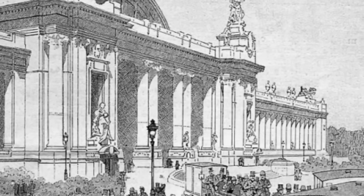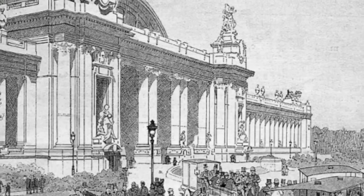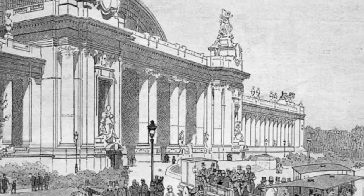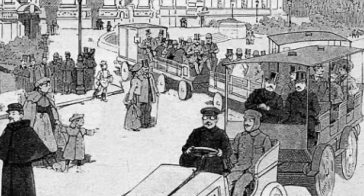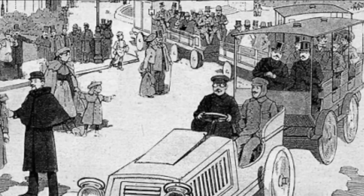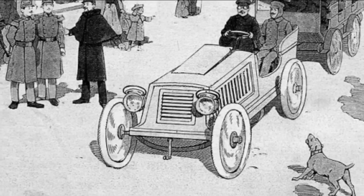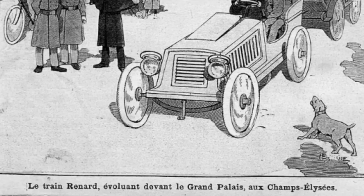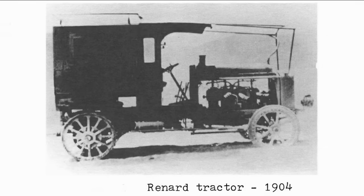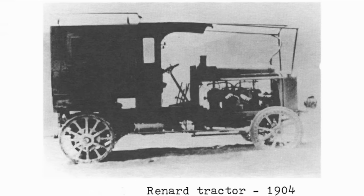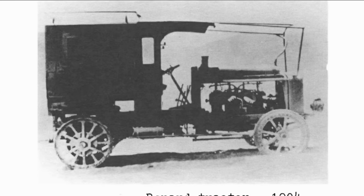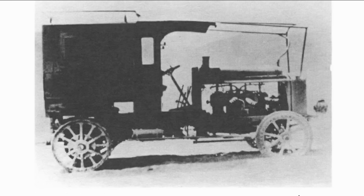Since the French government refused to finance Renard's experiments, he sent several examples of tractor trains to different countries to attract customers' attention to his developments. One of them was sent to the USA in 1904. Unfortunately, on the way, a storm washed one of the trailers of this train overboard.